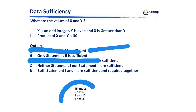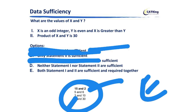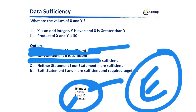Now combining both statements: the product is 30, x is odd, y is even, and x is greater than y. From the four product pairs, only 15 and 2 satisfies all conditions — x=15 (odd), y=2 (even), and x > y. So combining both statements gives the answer. The answer option is E — both statements are sufficient and required together. This is how these questions work; it did not take much time.